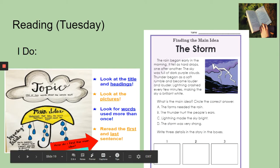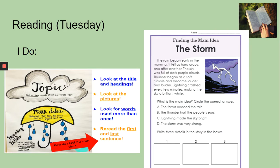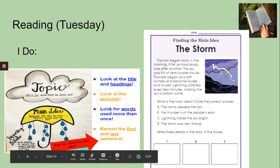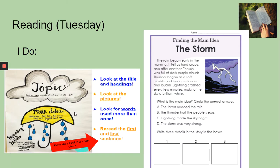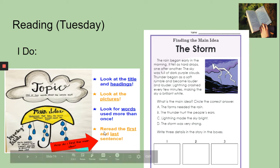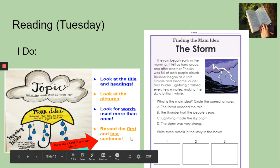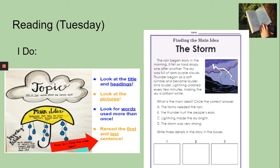All right, boys and girls, yesterday you saw this beautiful anchor chart that is on the left side of your screen. How do we find the main idea? There are different ways that we can find the main idea. The main idea is what the story is about — what most of the story is about. One way to find the main idea is to look at the title and headlines or headings. The next way is to look at the pictures. Next, look for words used more than once. And the last way to find the main idea is to reread the first and last sentence. We're going to be using all of those strategies today to help us find the main idea of this story.